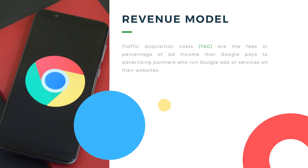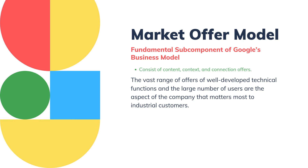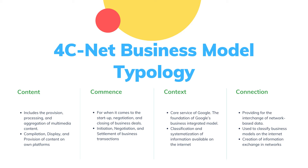The Market Offer Model is a fundamental subcomponent of Google's business model, consisting of content, context, and connection offers. The vast range of well-developed technical functions and the large number of users are the aspects of the company that matter most to the industry. The high number of users is connected to the search engine's strong usage and high recognition value. The free use of Google's many web services is very enticing to private users. The 4C net business model topology is used to classify Google services, which provides insight into the company's formal structure. Google is considered a hybrid business as it embraces all four dimensions.